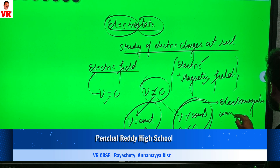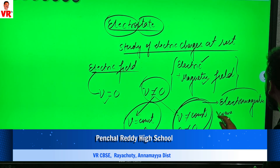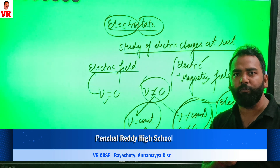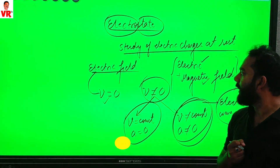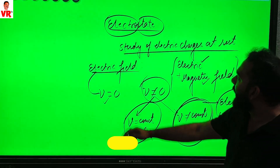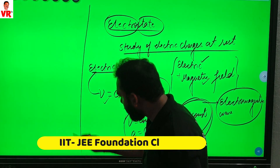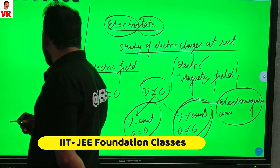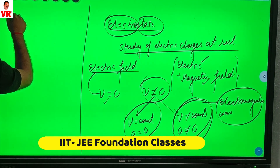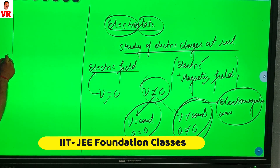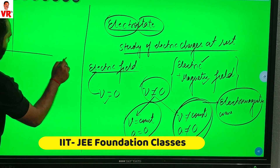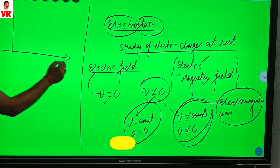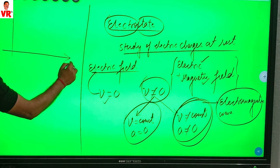Electromagnetic wave. Now, the question is: what is an electromagnetic wave? An electromagnetic wave is produced when both the electric and magnetic fields are propagating perpendicular to each other.